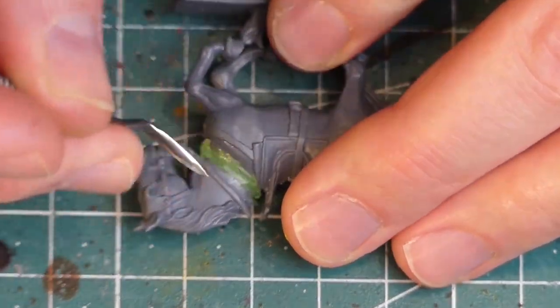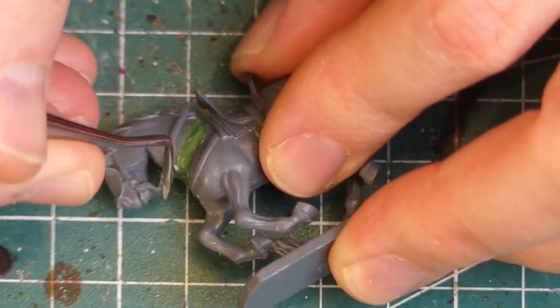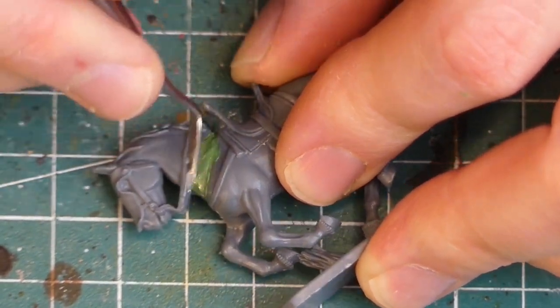I also fill in the gap at the horse's neck. For the horse is Fireforge and the head is Perry Miniatures. By combining these different sets you get some variation also to the horses.